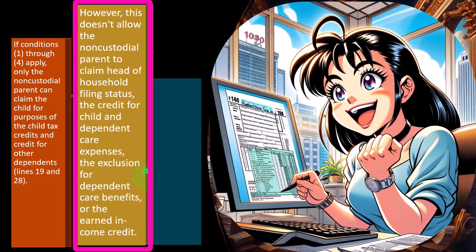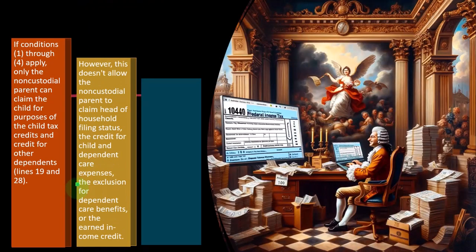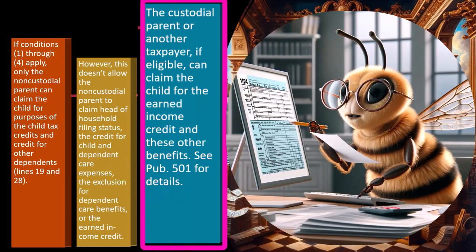If you're in this kind of weird situation where you're the non-custodial parent, you might not get the same benefit as if you were the custodial parent with a dependent on the form. This doesn't allow the non-custodial parent to claim head of household filing status, the credit for child and dependent care expenses — not the child tax credit, that's a different credit — the exclusion for dependent care expense benefits, or the earned income tax credit, which is another huge refundable credit that depends largely on the number of dependents.